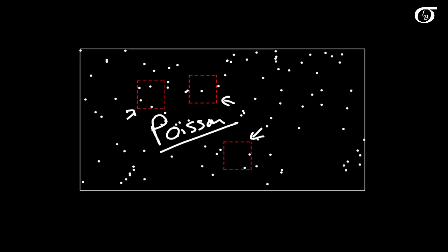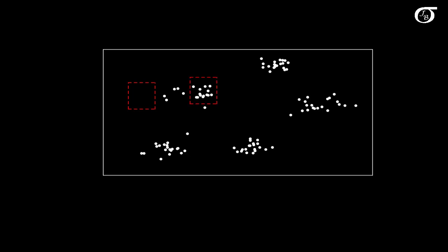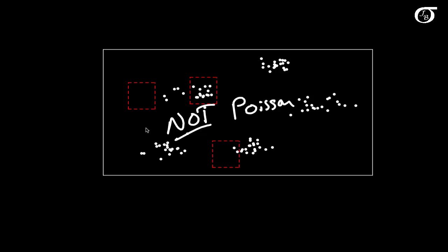But what happens when they are not occurring purely randomly and independently? Suppose there is some clumping — maybe plants clumping together, or cows accumulating in areas. If we randomly select a plot, a lot of the time we'll get no occurrences because there's a lot of empty area, but sometimes we'll get a whole lot of occurrences. We get a lot of zeros and a lot of big counts. Since they're not randomly scattered, this is not going to follow a Poisson distribution.